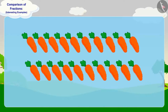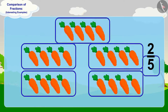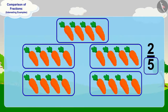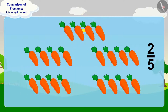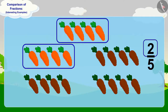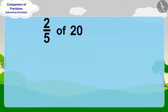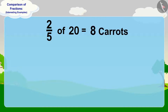Well done, children — you have found the perfect answer. To find two-fifth of 20 carrots, we will divide 20 carrots into five equal parts. In this way, there will be four carrots in each part. Now, to find two-fifth part, we have to take two parts out of these five equal parts. In this way, two-fifth of 20 carrots will be eight carrots. Babban will give eight carrots to Bunni.